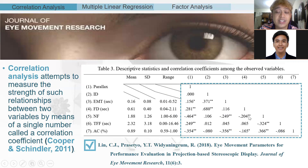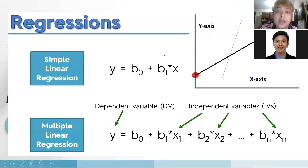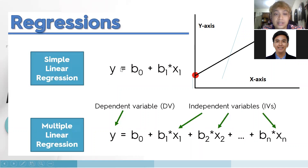If you have correlation data, you can do multiple linear regression. Usually in multiple linear regression, if you want to make a mathematical equation, the title is typically 'predicting something' — predicting a certain Y using certain X values, or predicting one dependent variable using several independent variables. That's what we call multiple linear regression.